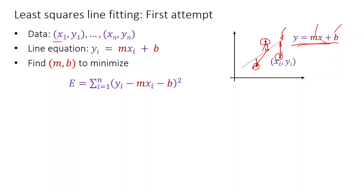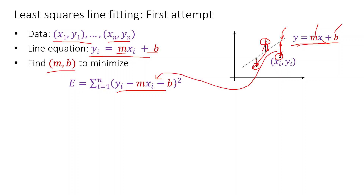The dataset we are given is (x₁, y₁) up until (xₙ, yₙ). The line equation is yᵢ = mxᵢ + b. If we find these parameters m and b, the points in the dataset should more or less fit those. Therefore, this error measure can be defined as the sum of squared residuals, and when we minimize that we get the least squares line fit. i goes from 1 to n because we have n points.